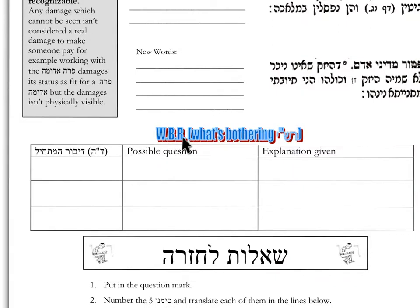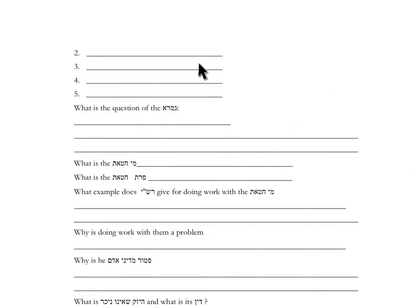WBR — 'What's Bothering Rashi' — the Brahmaschal is written, the possible question, and after it's learned, the answer. Some more questions.